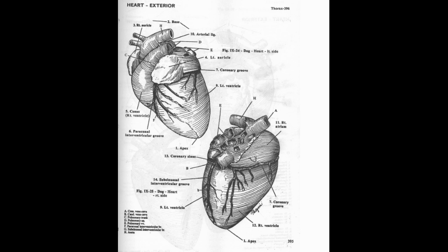Inside the coronary groove there are left and right coronary arteries. The coronary groove is present at the base of the heart and is a clear separation of both atria from both ventricles. There is also a groove on the caudal border of the heart called the intermediate groove.